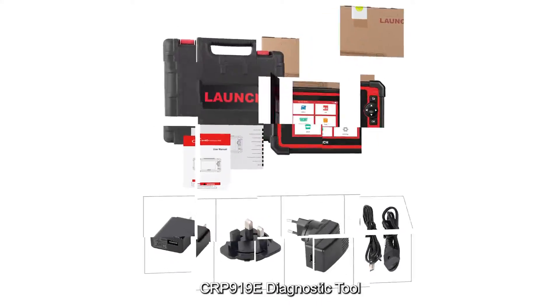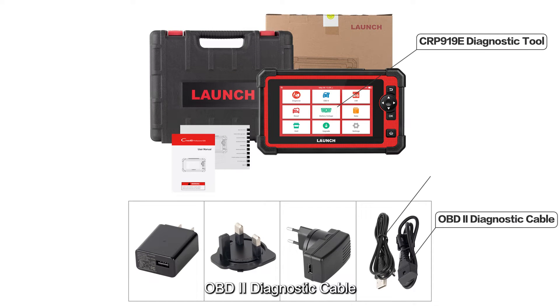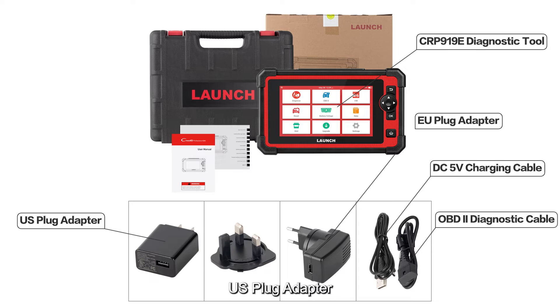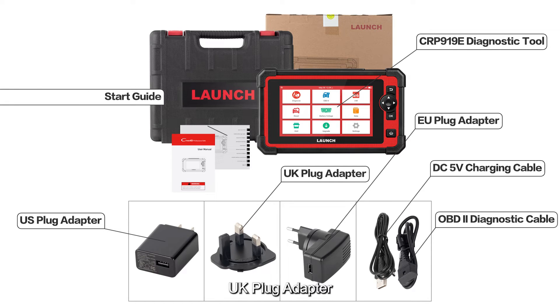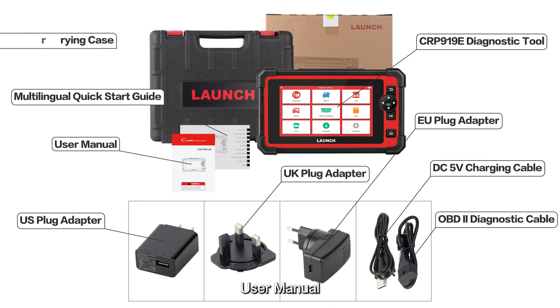Packing list includes: CRP 919E diagnostic tool, OBD2 diagnostic cable, DC 5V charging cable, US plug adapter, EU plug adapter, UK plug adapter, multi-lingual quick start guide, user manual, and carrying case.